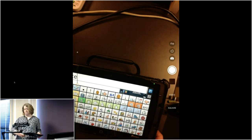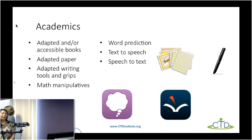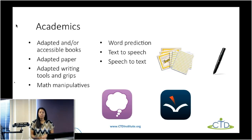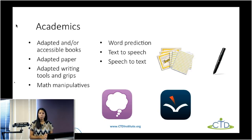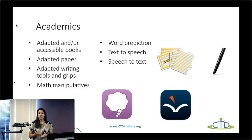Academics in and of itself could be a whole workshop. When we talk about academics we're mostly talking about reading, writing, and math, and there are a variety of supports ranging from low-tech to high-tech. Some low-tech devices include bright lines paper — that yellow and white paper on the slide — which helps kids differentiate between the top and bottom of the line so they're correctly forming and placing their letters as they're writing. They also make raised line paper where all the lines have a tactile raised element to guide students as they write.